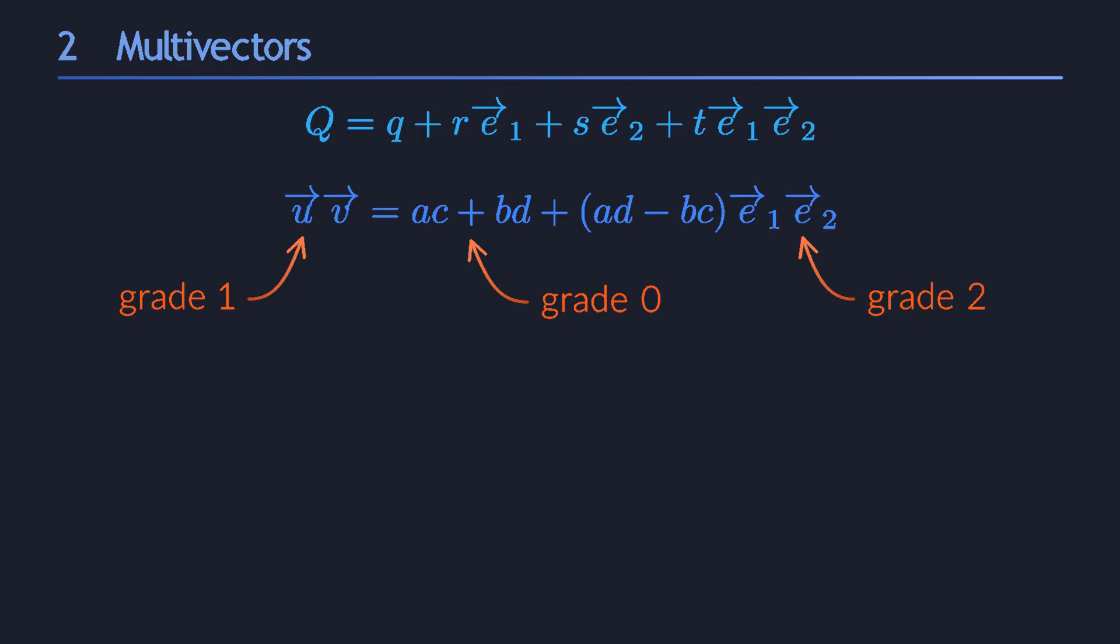The dot product lowers the grade and the wedge product increases it. Maybe this reminds you of how the tensor product produces bigger things and the inner product produces smaller things. I mentioned this in the series on tensor algebra. We have a very similar thing going on here.